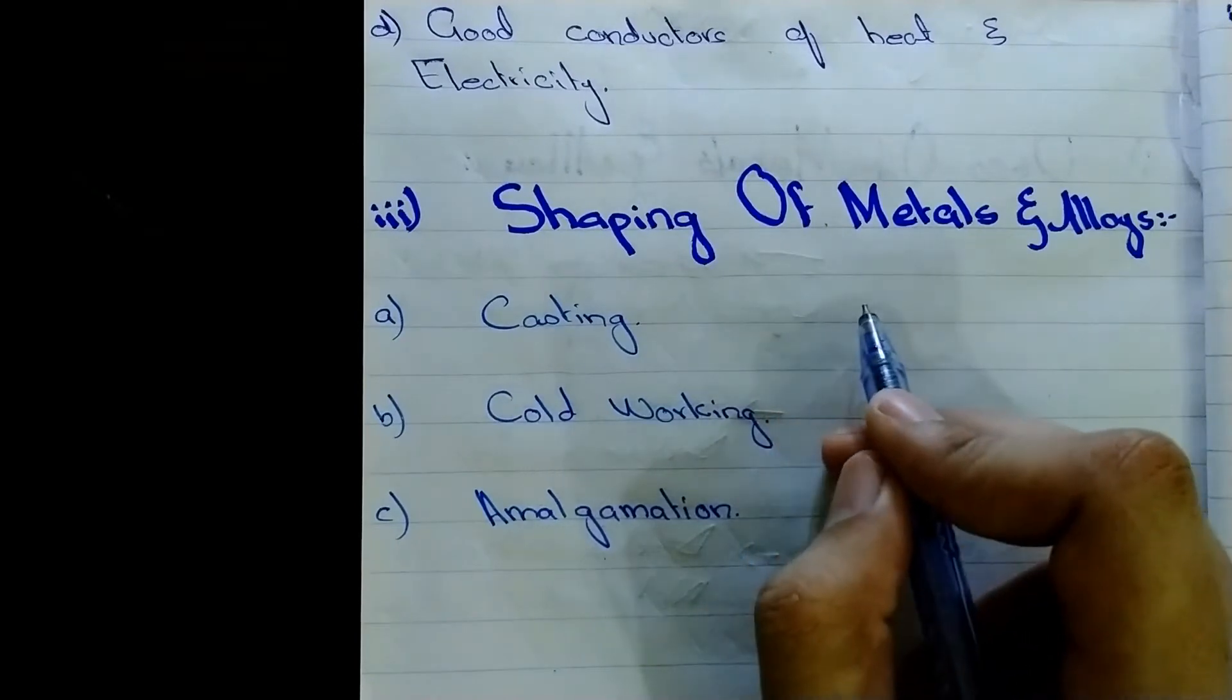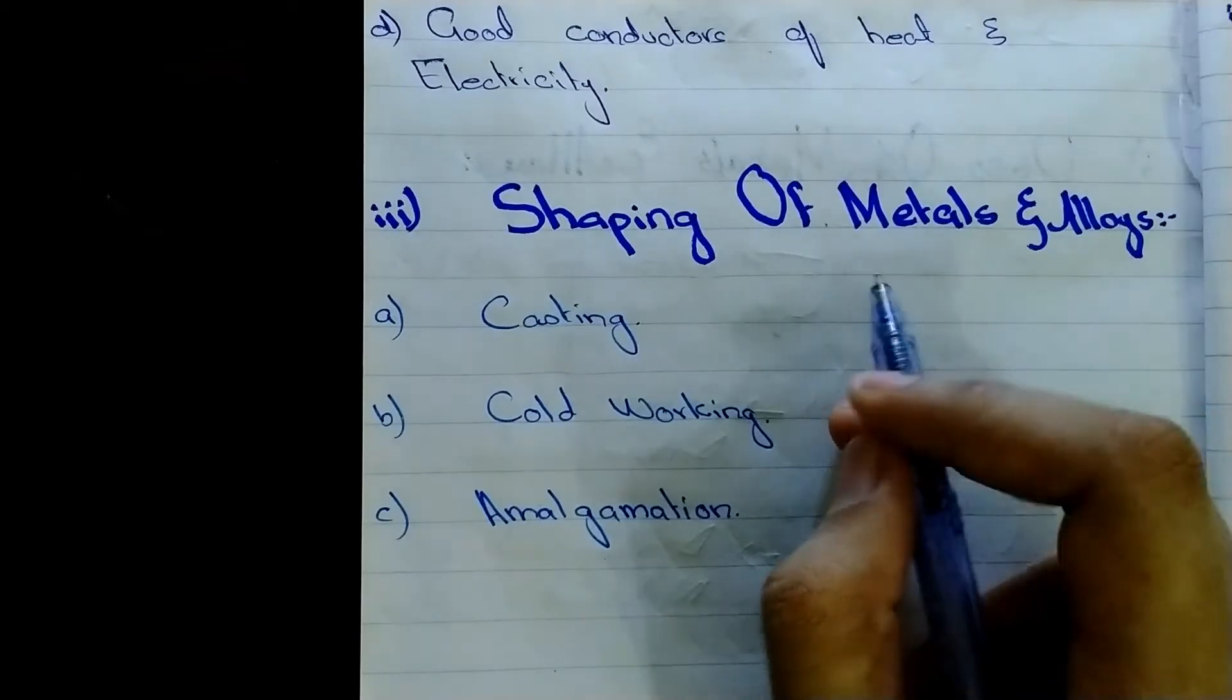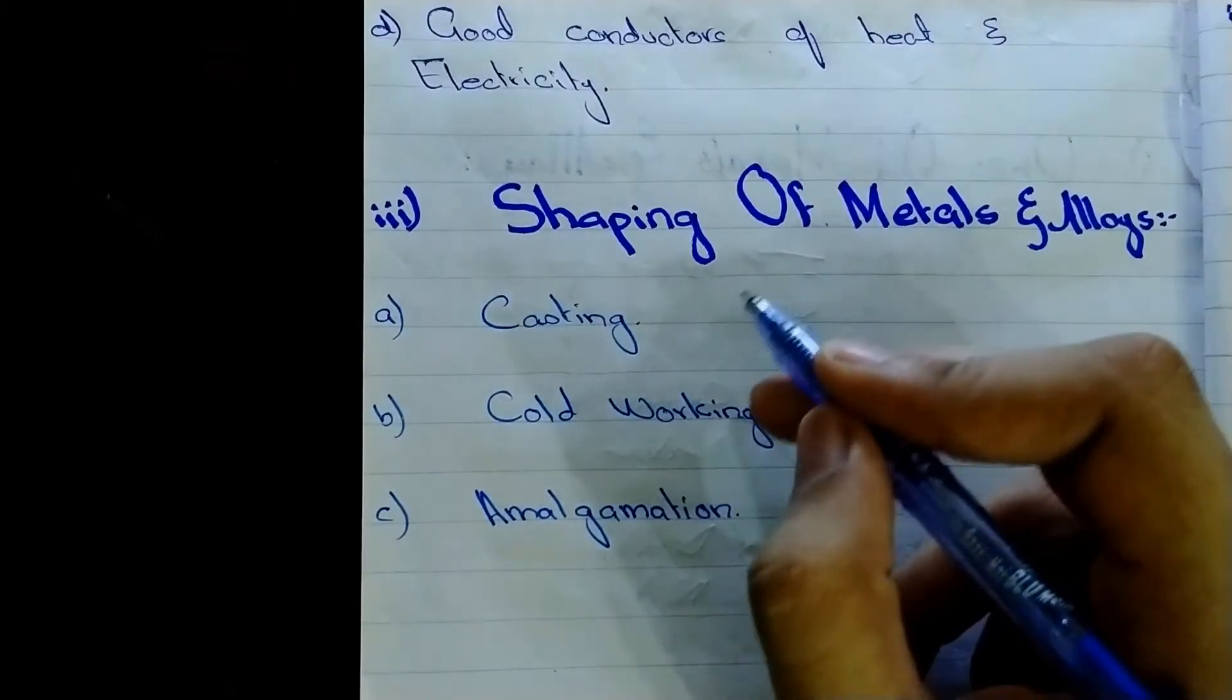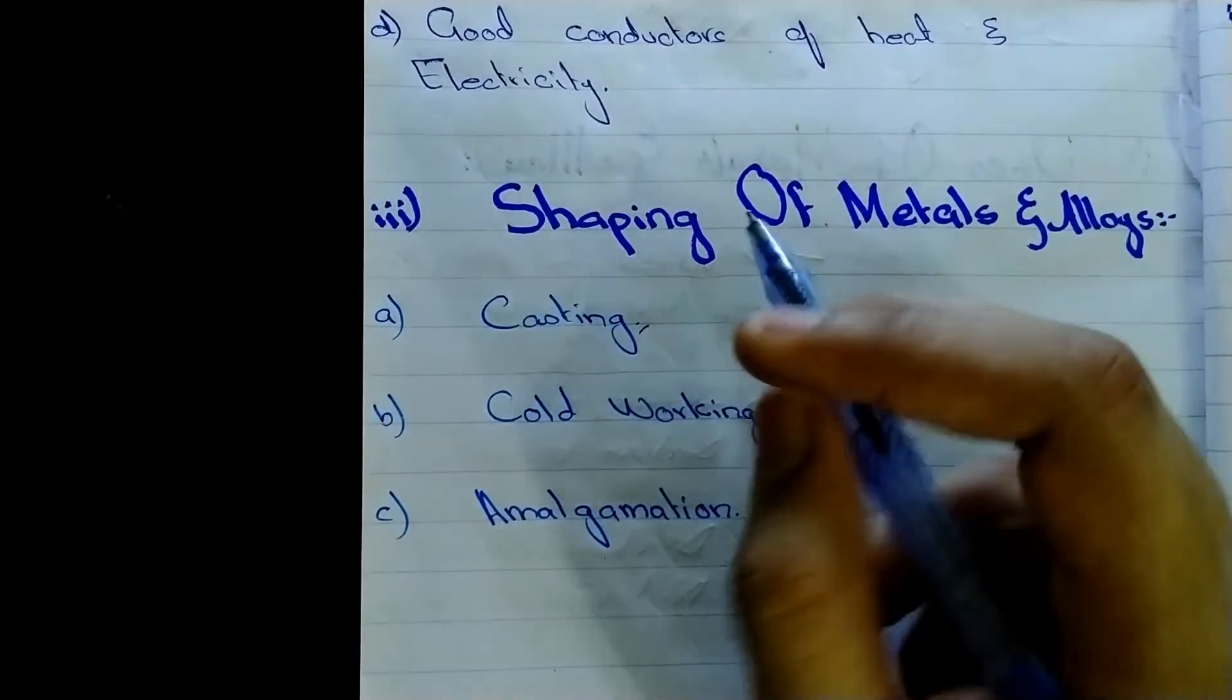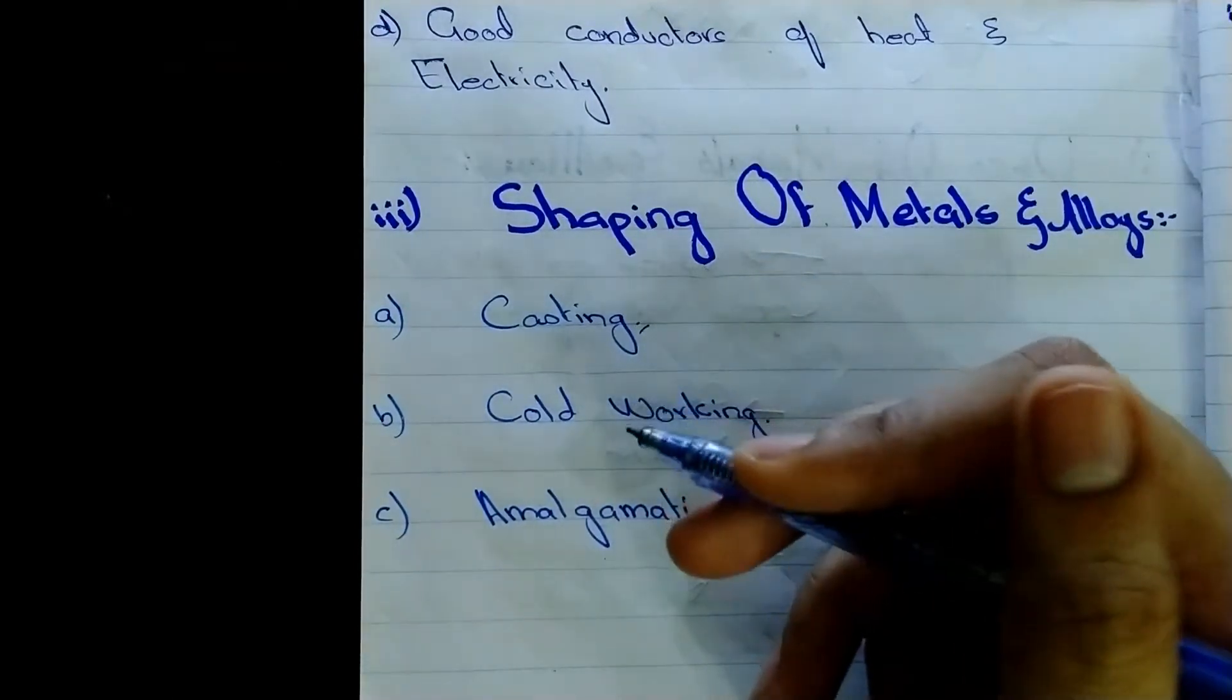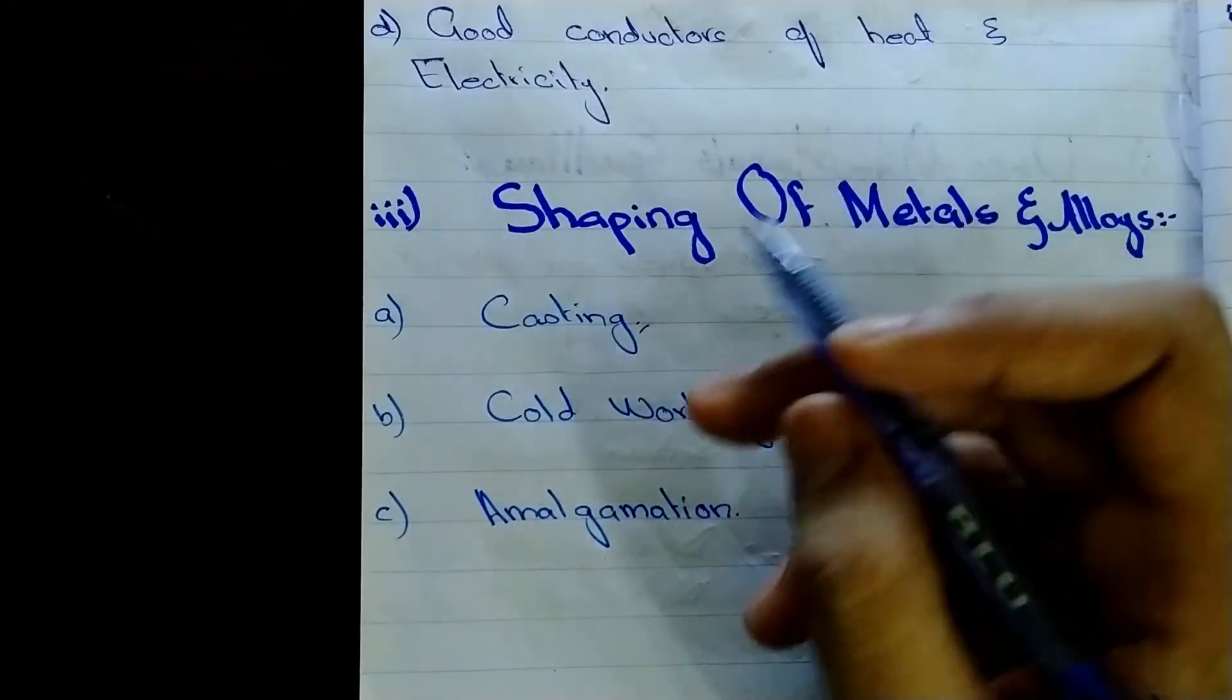Thirdly, the shaping of the metals and alloys. The shaping of metals and alloys is carried by three processes. Number one is casting, in which molten metal is forced into the pre-formed mold from the wax pattern.